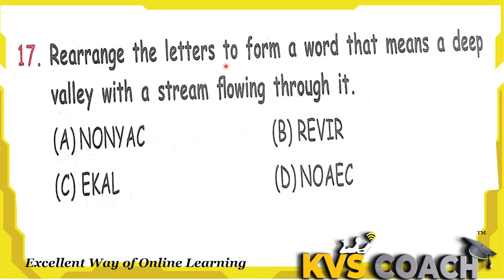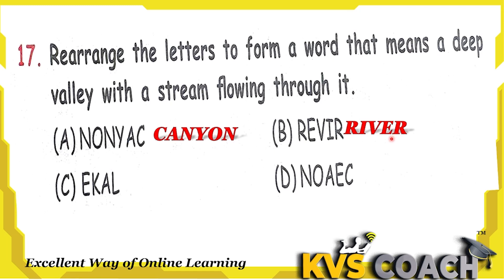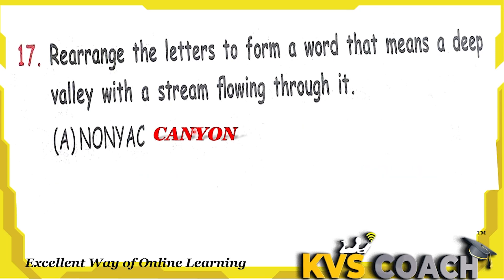Next question: rearrange the letters to form a word that means a deep valley with a stream flowing through it. Option A, Canyon — yes, a canyon is a deep valley with a stream flowing through it. Option B, River — a water body. Option C, Lake — also a water body. Option D, Ocean — also a water body and the largest on earth. So the right answer is option A, Canyon.